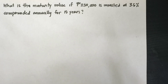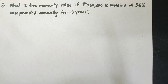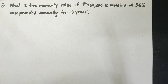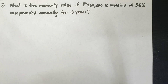Problem number 5: what is the maturity value if 250,000 pesos is invested at 3.5% compounded annually for 15 years? At this point it is not about simple interest anymore, since it is indicated that the 3.5% is compounded annually.